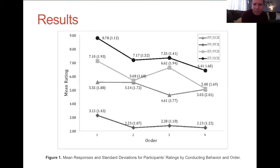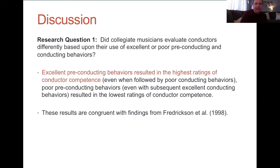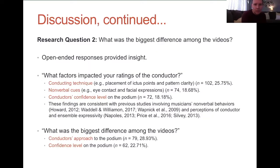Here you see some results. In bold at the top, excellent behaviors — both pre-conducting and conducting — received the highest ratings. Poor pre-conducting behaviors were in the middle. This indicates that excellent pre-conducting behaviors resulted in the highest ratings of conductor competence, even when followed by poor conducting behaviors. These results are congruent with the findings from the Fredrickson and others study in 1998. Open responses were evaluated regarding what was the biggest difference among the videos. Participants indicated that conducting technique, nonverbal cues, eye contact, facial expressions, and conductors' confidence level on the podium impacted their ratings of each conductor.